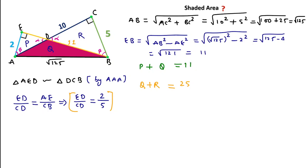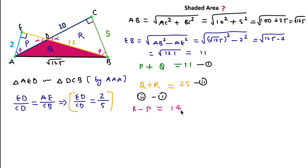Now if we consider the first equation as (P + Q = 11) and the second as (Q + R = 25), and do second minus first, then Q cancels and we get R − P = 14.